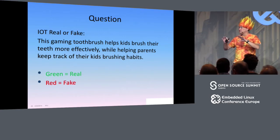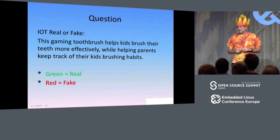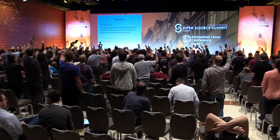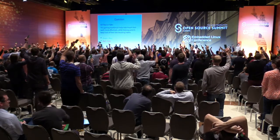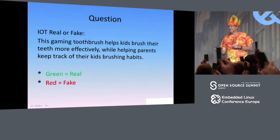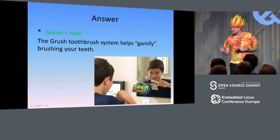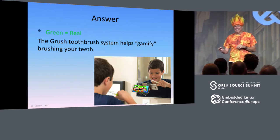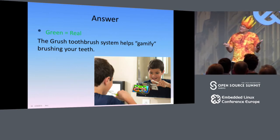Now we have a new kind of subsection called IoT Real or Fake. This gaming toothbrush helps kids brush their teeth more effectively while helping parents keep track of their kids' brushing habits. Is that a real or a fake IoT device? It didn't fool anyone — it's real. It's the Grush toothbrush system.